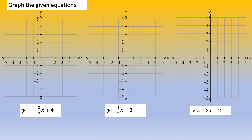Let's graph these lines based on these equations. For y equals negative 2/3 x plus 4, first we go to 4 on the y-axis, then count down 2 and over 3, and draw the line through those two points. On the next one, y equals x plus something: we go to negative 3, then up 1 and over 2, and draw the line. On the third one, we put a point on 2 on the y-axis, then go down 3 and over 1 for the slope, and draw the line through those two points.